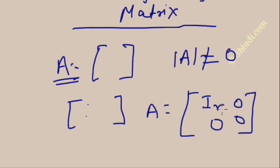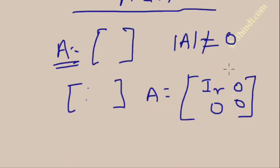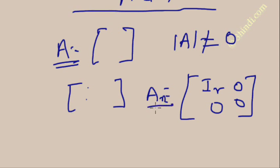I_R is the unit matrix of order R, where R is the rank. Suppose A is of rank 2, then I_R is the unit matrix of order 2. If A has rank 3, then I_R is I_3, the unit matrix of order 3. By performing all row and column elementary transformations, you will get the matrix in this form. This form is called the normal form of matrix A, and you can denote it as N.